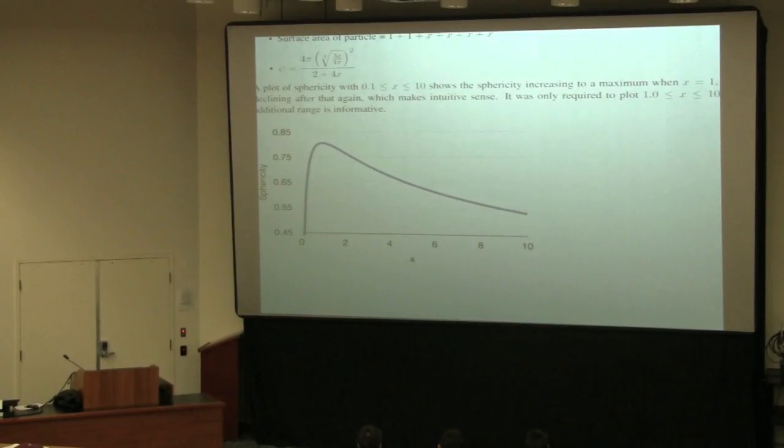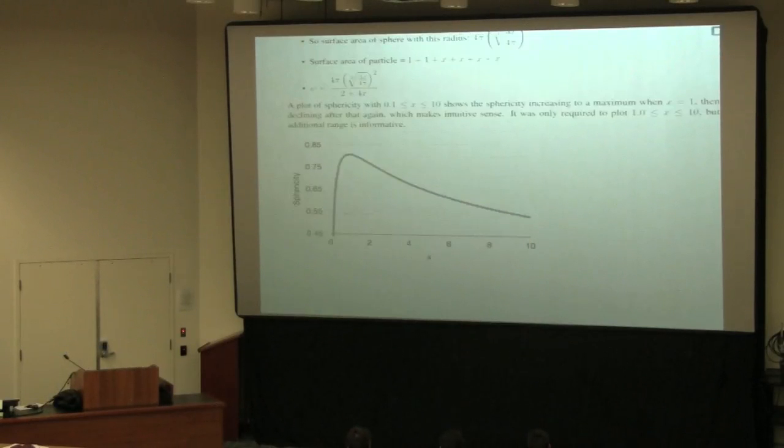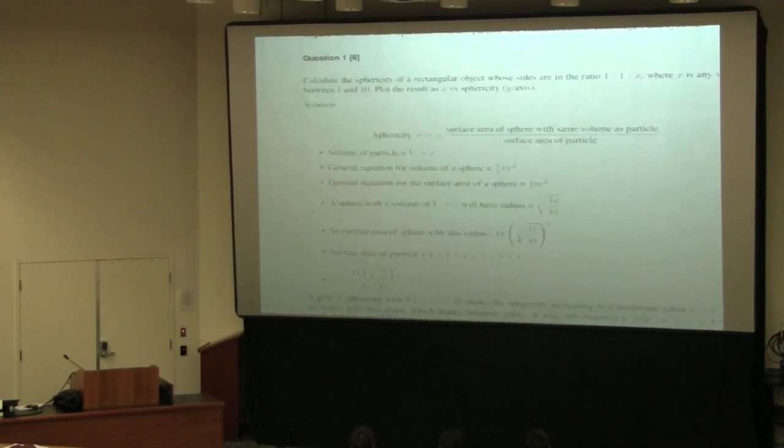If this curve looks a little different to yours, don't worry. I plotted it from 0.1 all the way up to 10. That's the maximum. So this object, the 1 to 1 to 1 cube, would be the most spherical that you could get. That's an interesting and expected outcome from that equation. What is also very interesting is how very rapidly it approaches the very spherical particle and then the decline takes much, much longer. Very straightforward problem. Very few marks, 6 out of 60.